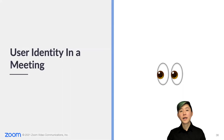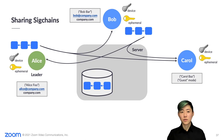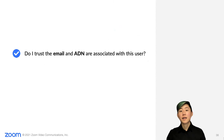Now I'll explain how this identity information will be displayed and verified by meeting participants. If the user would like, or if the meeting settings require identity information in order to join, the user may share their user identity with their meeting partners. Note that you can always join a meeting as a guest using a fresh ephemeral device key, no SIG chain data, and displaying only the display name. For example, Bob has shared their user identity with Alice. Alice's client will automatically load the email and account domain identifiers associated with Bob's device key and display them in the UI, in addition to the display name.